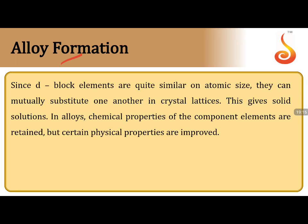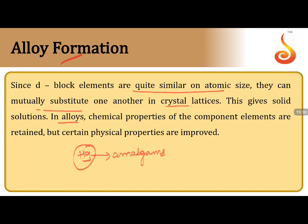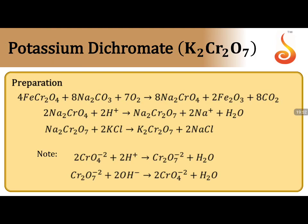Alloy formation: transition elements have quite similar atomic sizes, so they can mutually substitute one another in crystal lattices, forming solid solutions. If one of the metals is mercury, such alloys are called amalgams. In alloys, chemical properties are retained while physical properties are improved — this is a very important distinction.